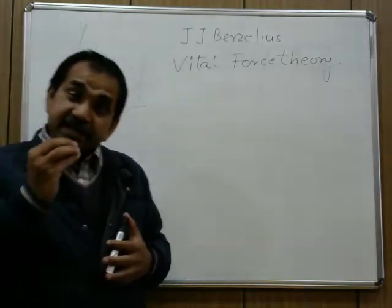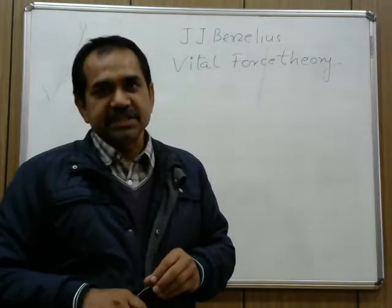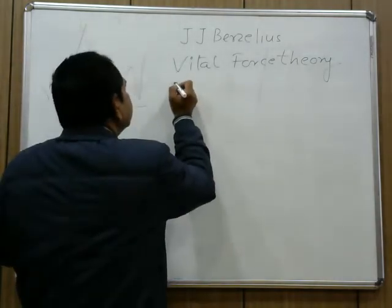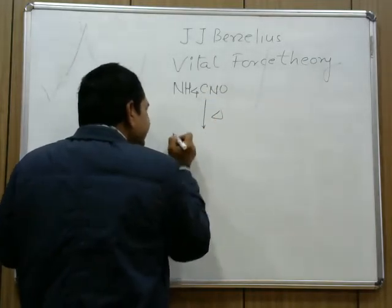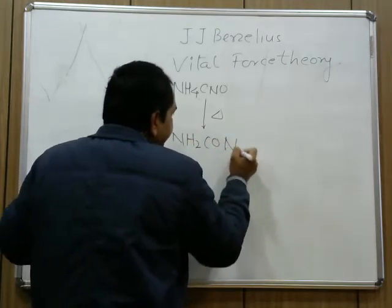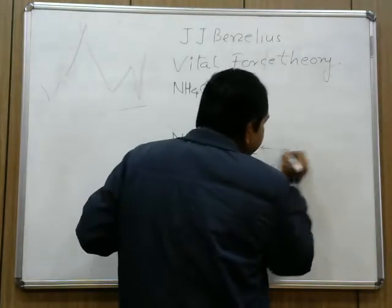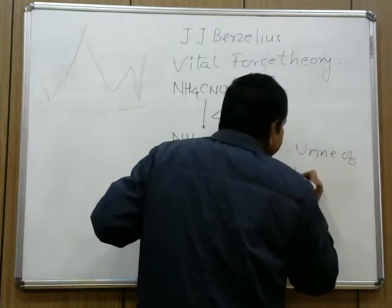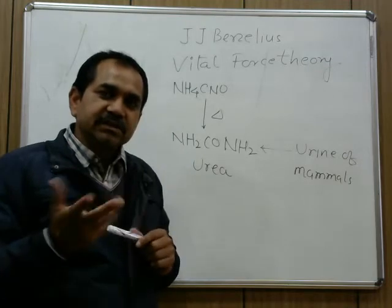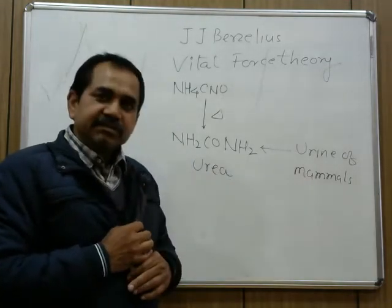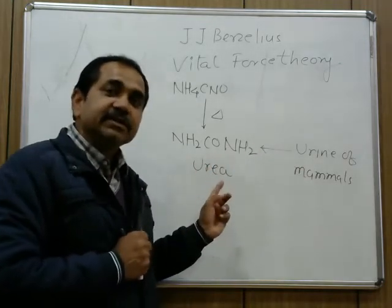However, it was Berzelius's own student, Frederick Wöhler, who was able to synthesize an organic compound from completely inorganic sources. He heated ammonium cyanate (NH4CNO), and on heating it rearranged into urea. Before this synthesis, urea was obtained from the urine of mammals — cows, buffalo, horses, and humans. Since urea was earlier obtained from living things, it was classified as an organic compound.